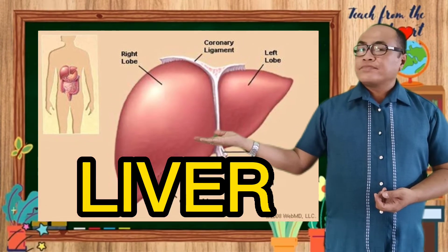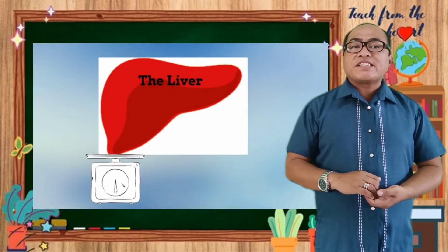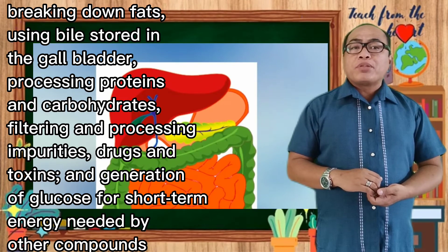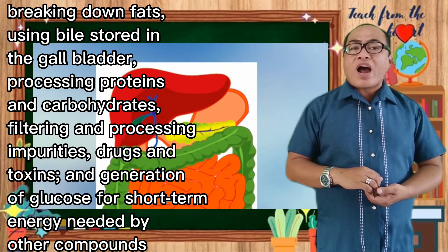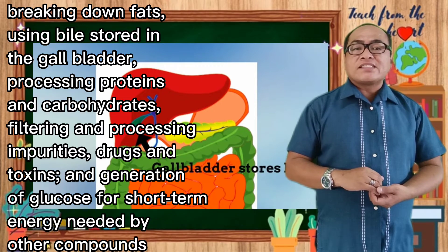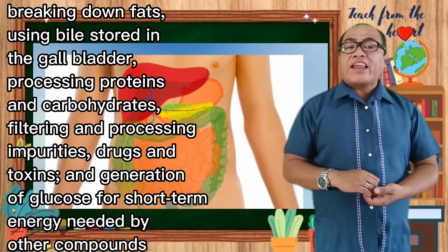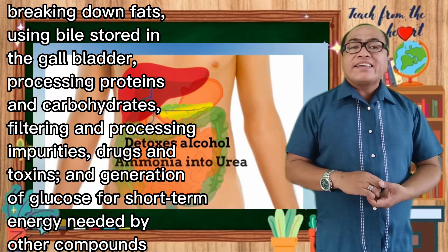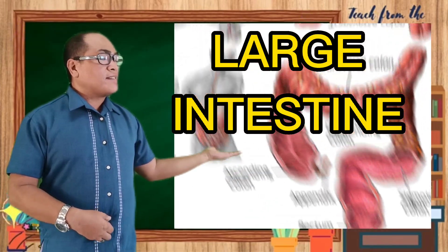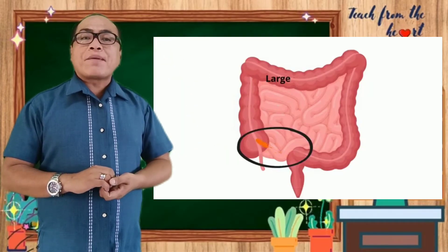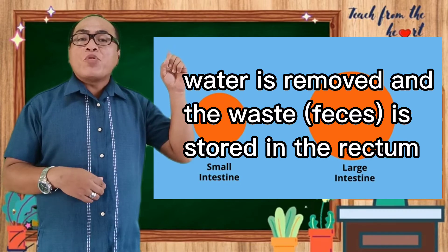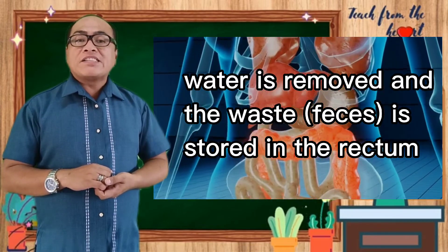The liver has a number of different roles in the body, including breaking down fats, producing bile which is poured into the gallbladder, processing proteins and carbohydrates, filtering and processing impurities, drugs and toxins, and generating glucose for short-term energy needs from other compounds like lactate and amino acids. Once all the nutrients have been absorbed, the waste is moved into the large intestine or bowel. Water is removed and the waste, or feces, is stored in the rectum. It can then be passed out of the body through the anus.